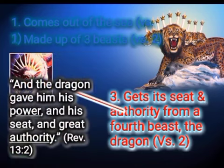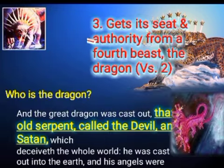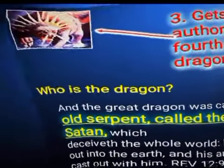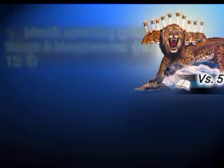Number three: the beast gets his seat and authority from the dragon. 'And the dragon gave his power and his seat and great authority.' Who is the dragon? 'And the great dragon was cast out, that old serpent called the devil and Satan, which deceived the whole world. He was cast into the earth, and his angels were cast with him.' Revelation 12:9. So the dragon is Satan, who is the devil.